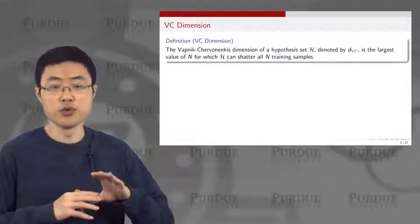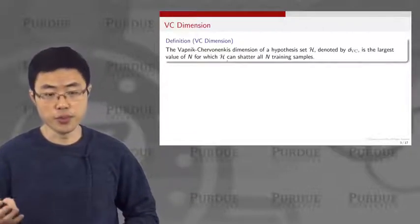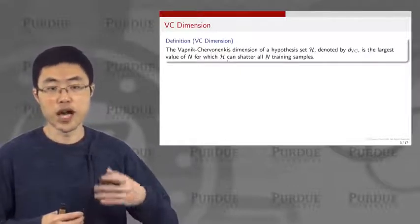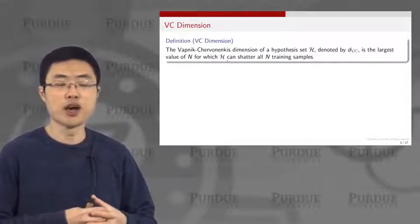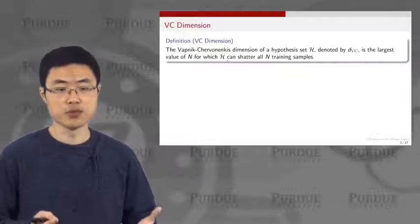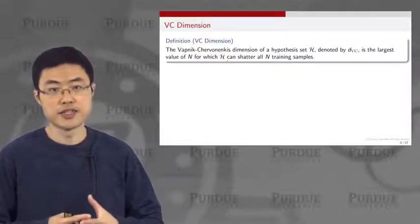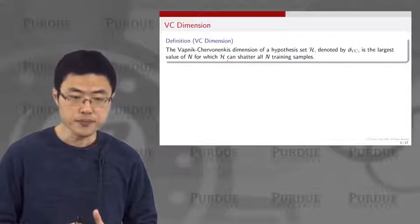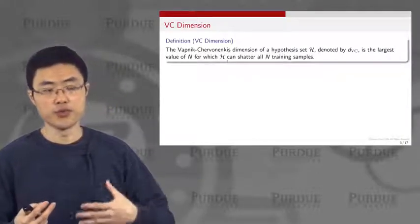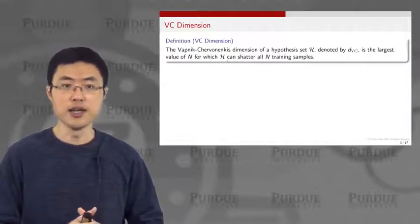It has nothing to do with your learning algorithm, nothing to do with your probability distribution — it depends only on the hypothesis set. If you have a more complex set, the VC dimension will be higher; if you have a less complex set, the VC dimension will be smaller. VC dimension is a very good number to quantify the complexity of a model.